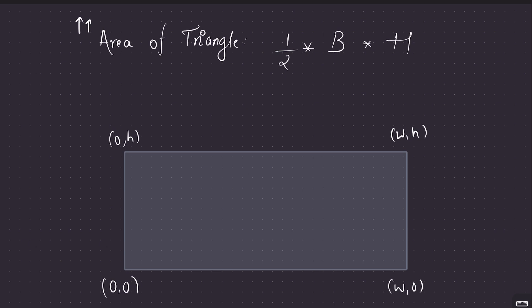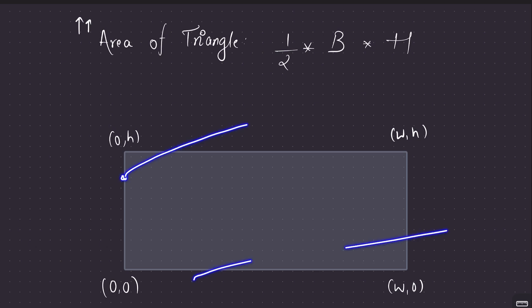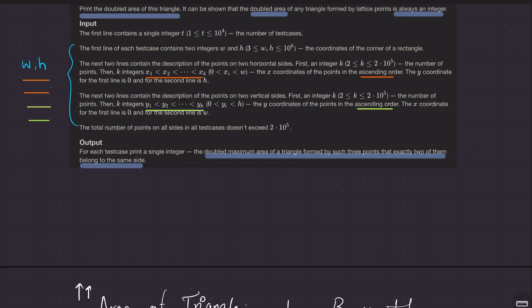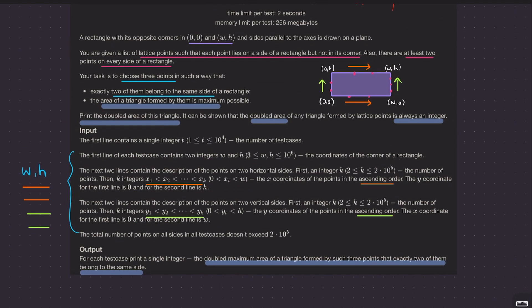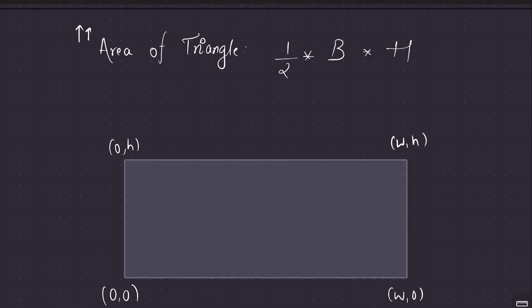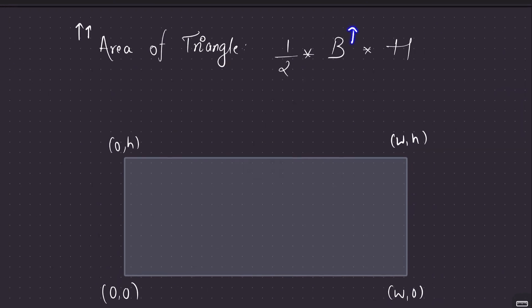We want to choose two points on a single side and one point on another side. I'll consider the side formed by the two chosen points as the base. To maximize the area, we need to maximize both the base and the height. So we choose the two farthest apart points on a given side — this maximizes the base.